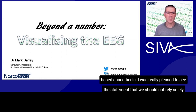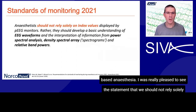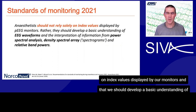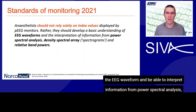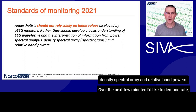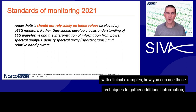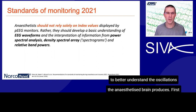I was really pleased to see the statement that we should not rely solely on index values displayed by our monitors, and that we should develop a basic understanding of the EEG waveform and be able to interpret information from power spectral analysis, density spectral array, and relative band powers. Over the next few minutes, I'd like to demonstrate with clinical examples how you can use these techniques to gather additional information to better understand the oscillations the anaesthetised brain produces.